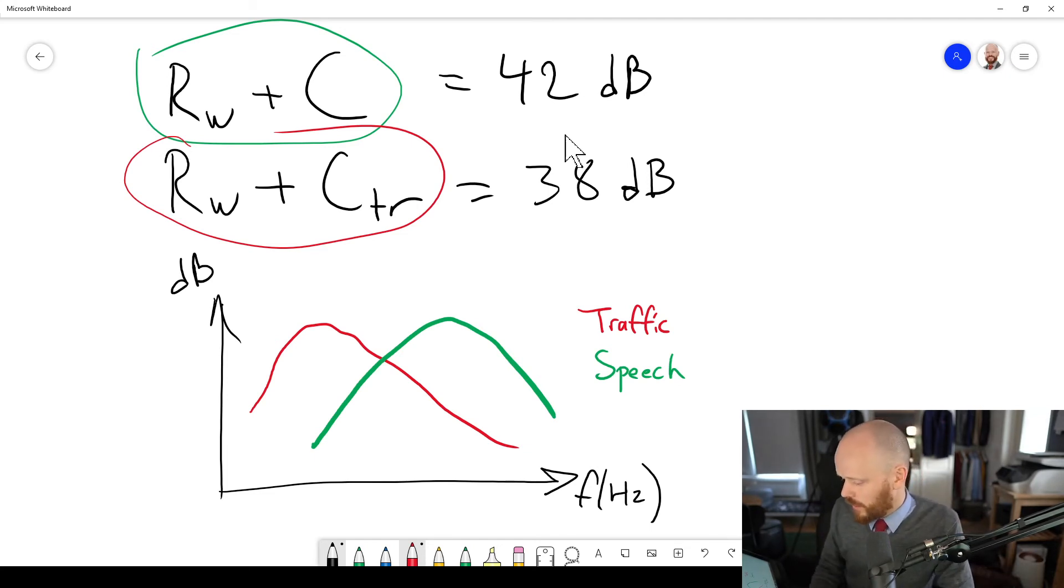So we usually, to avoid this problem, we can take the RW plus C and approximate an RW plus CTR value so that we only use the RW plus CTR rating also towards the quiet side of the building. So you have the same parameter, RW plus CTR, all around the building. And then the risk of error is reduced a little, and that's usually a good thing when you're working with engineering.